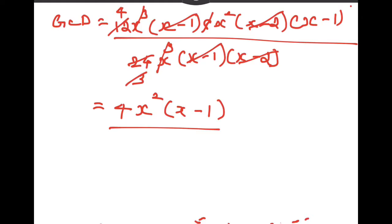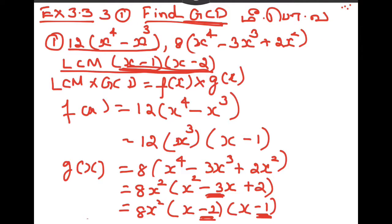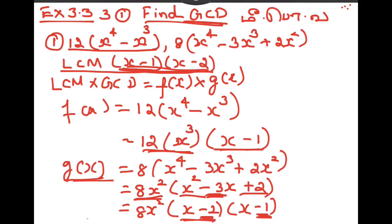Now let's see how we get the formula. We have F of x: 12 into x cubed into x minus 1. That's why G of x is equal to x to the power of 4 minus 3x cube plus 2x squared. Taking x squared common gives x squared times x squared minus 3x plus 2, which splits as x minus 2 into x minus 1.